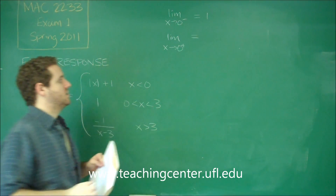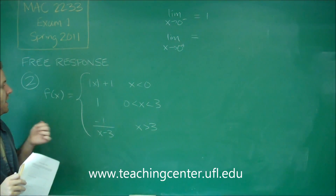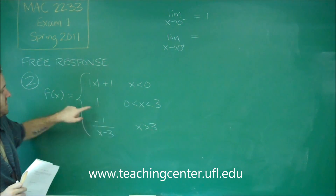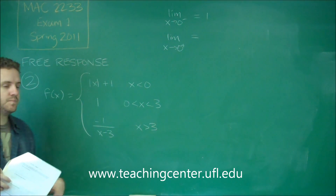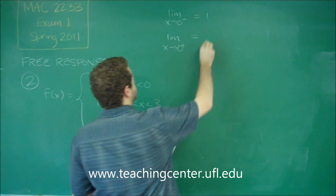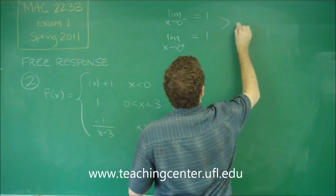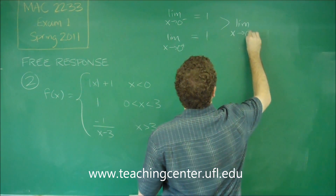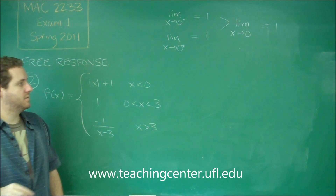The limit as x goes to zero from the right: from the right we need numbers bigger than zero, so we use the middle function because that's where x's are bigger than zero. That's just one as well. Since both the left and right limits are one, that tells us the limit as x approaches zero is one.